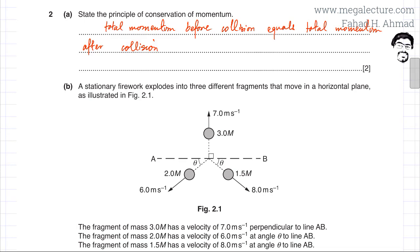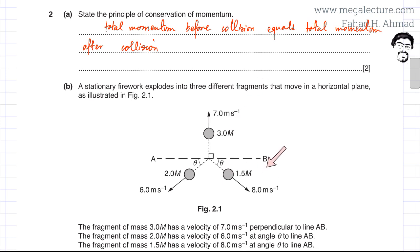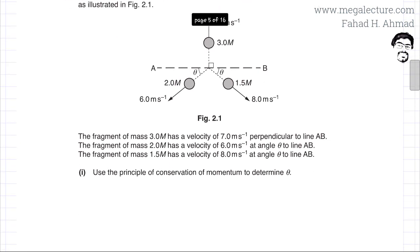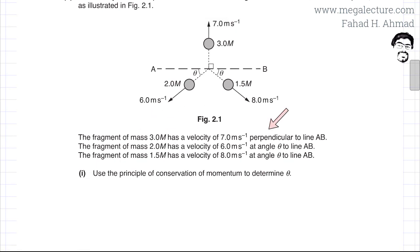Moving to part b, the question states that a stationary firework explodes into three different fragments moving in a horizontal plane. There are three particles: one with mass 3m traveling at 7 m/s, another with mass 1.5m traveling at 8 m/s, and a third with mass 2m traveling at 6 m/s. You must use the principle of conservation of momentum to determine the angle theta.